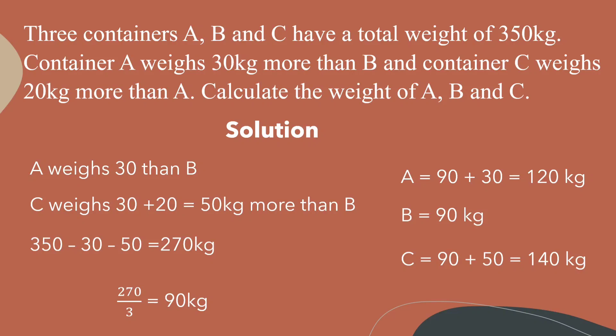Now we know the weight of container A is 120 kilograms, B is 90 kilograms, and C is 140 kilograms.